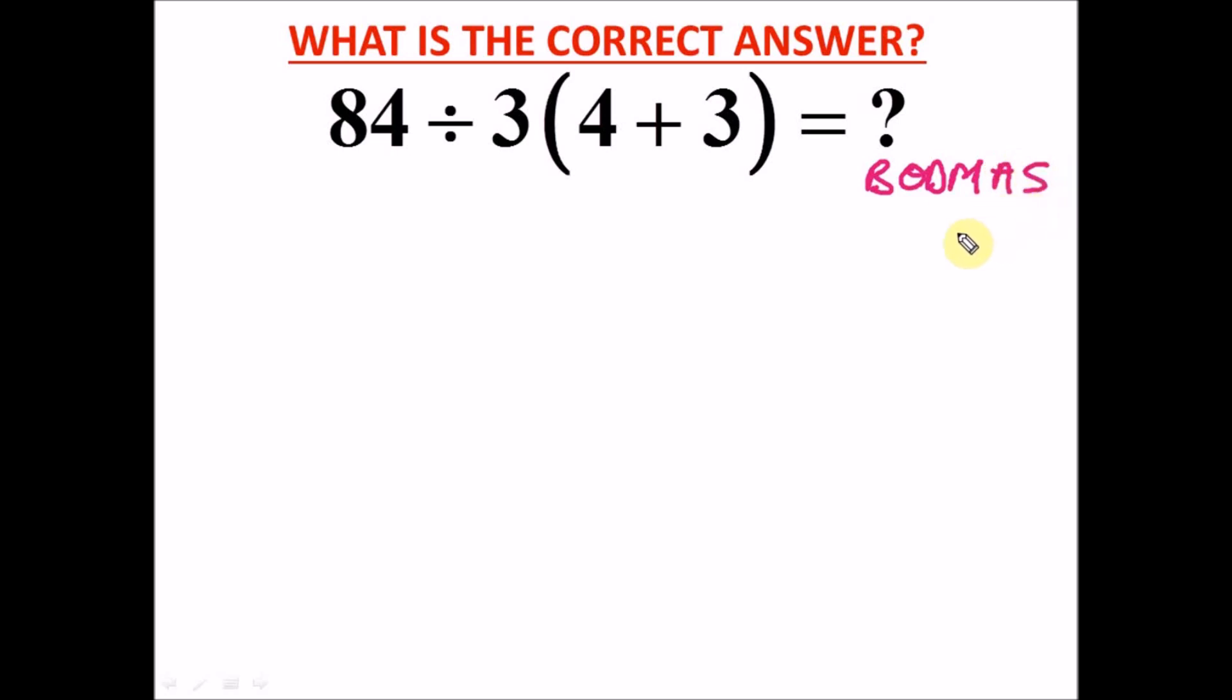Where B is for Bracket, O is for Of, D for Division, M for Multiplication, A for Addition, and S for Subtraction. Alright, now I'm going to solve this the wrong way and the correct way, showing you how I failed it.